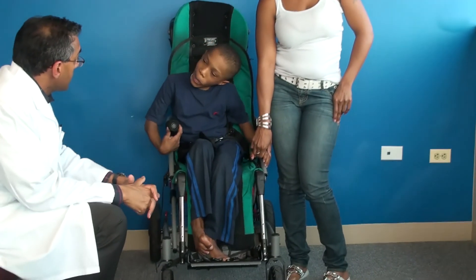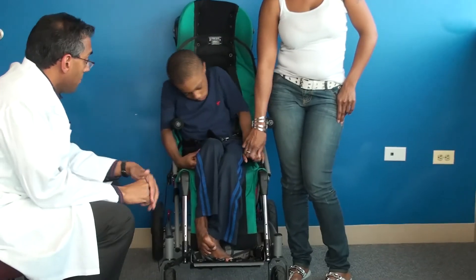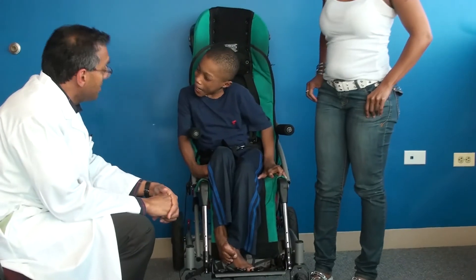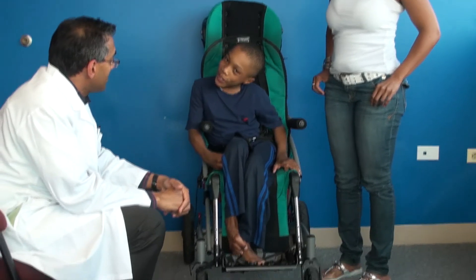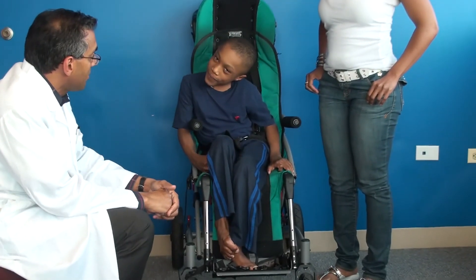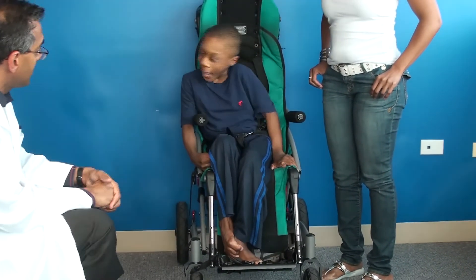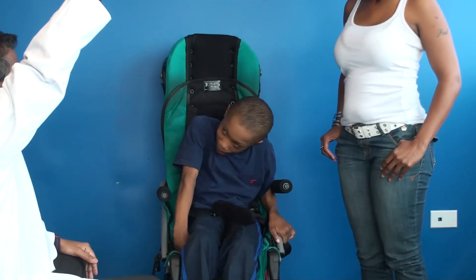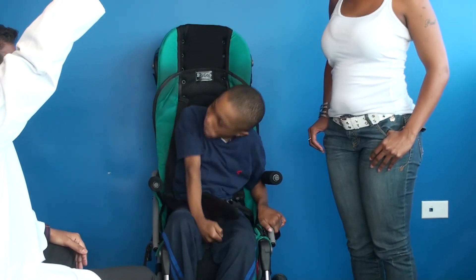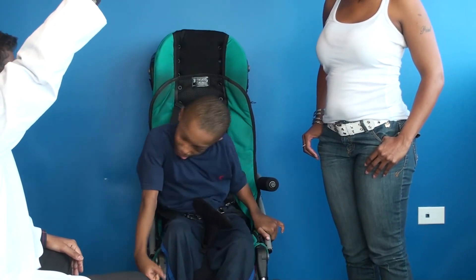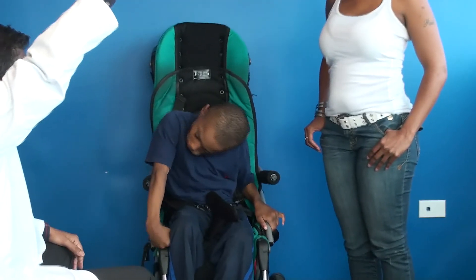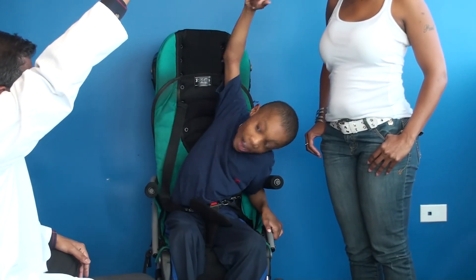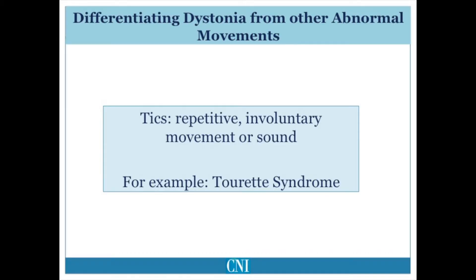The clinician asks the patient to count to ten out loud, then instructs the patient to raise their arms as high as they can. The patient counts from one to ten while the clinician encourages them to get up really high. After some effort, the patient manages to raise their arms, demonstrating the movement challenges associated with generalized dystonia.